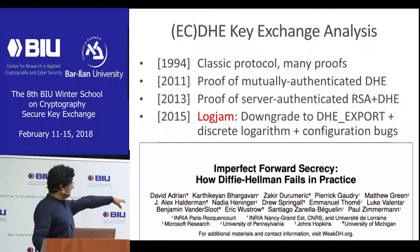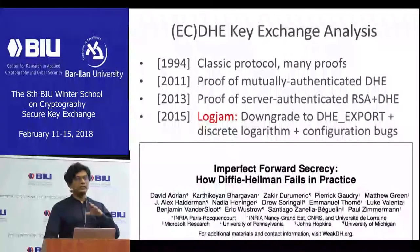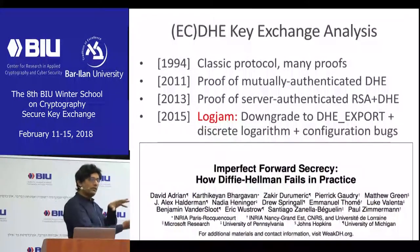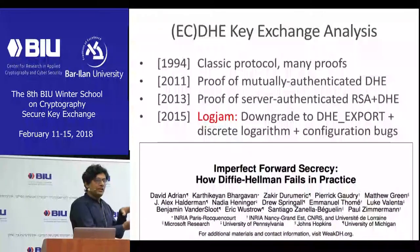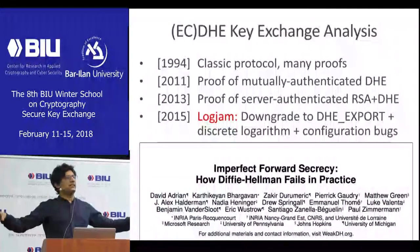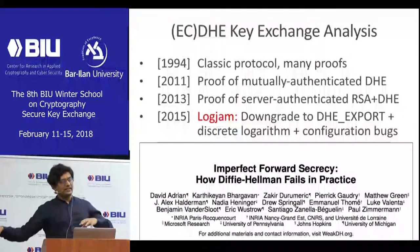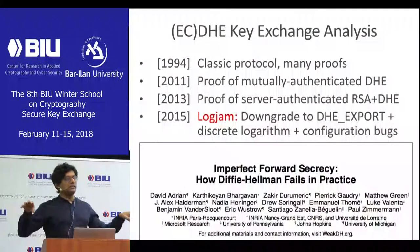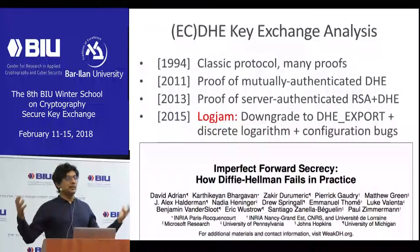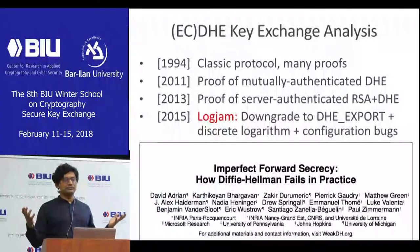In 2015, there was an attack called Logjam, which showed how even though the core Diffie-Hellman construction in TLS is secure, when you combine it with other things happening in the real world — like Diffie-Hellman export and bugs in the configuration of various clients and servers — bad things happen.